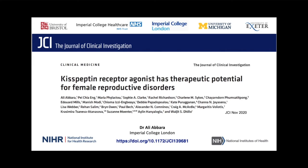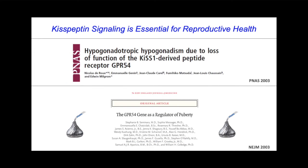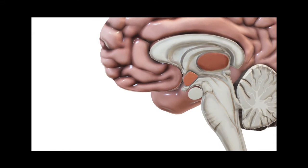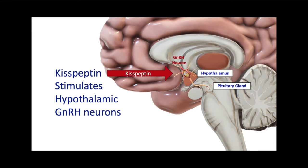The importance of Kisspeptin in the control of the reproductive endocrine axis became apparent in 2003 with the publication of these two seminal papers, which showed that Kisspeptin signalling was absolutely essential for reproductive health. Since then it's now established that Kisspeptin acts on GnRH neurons in the hypothalamus to in turn stimulate the remainder of the reproductive axis.